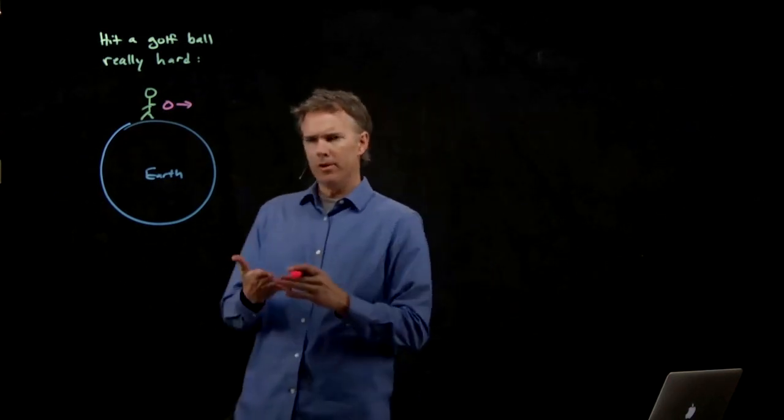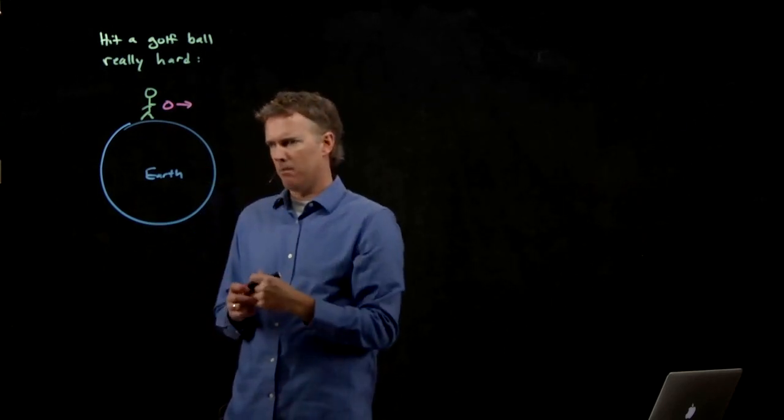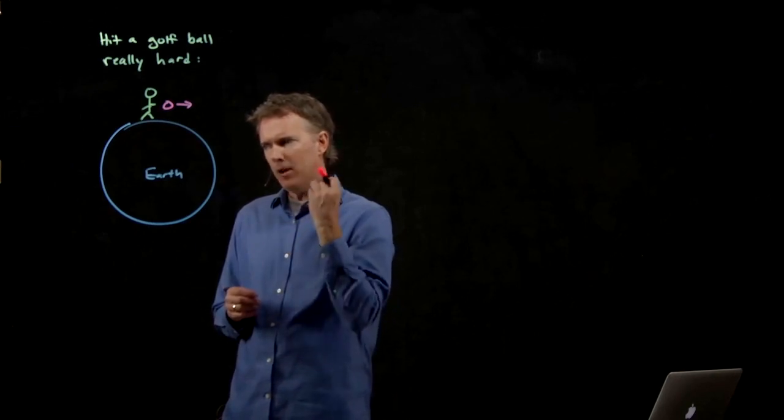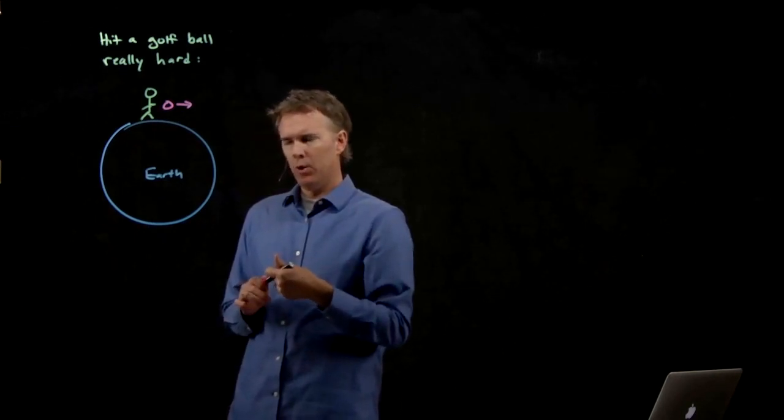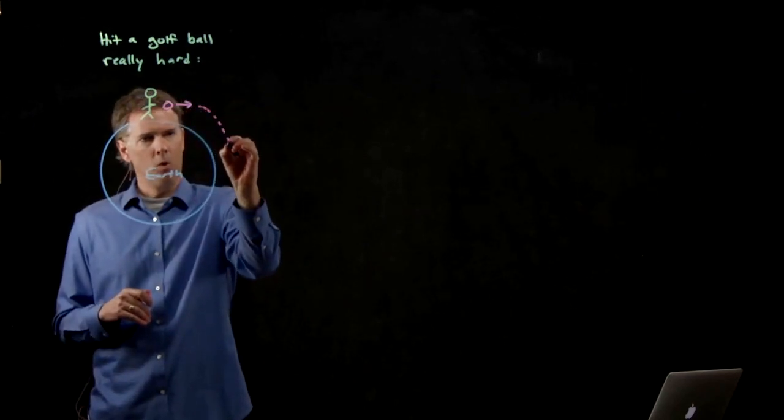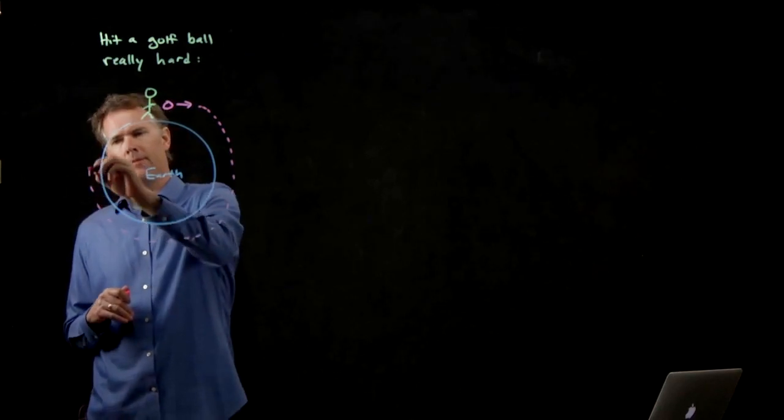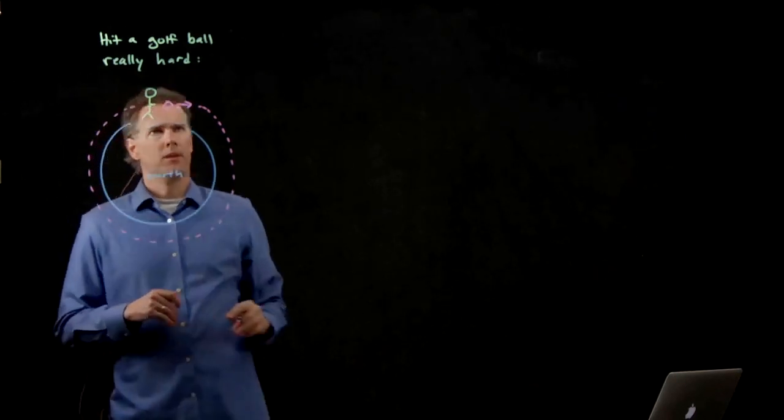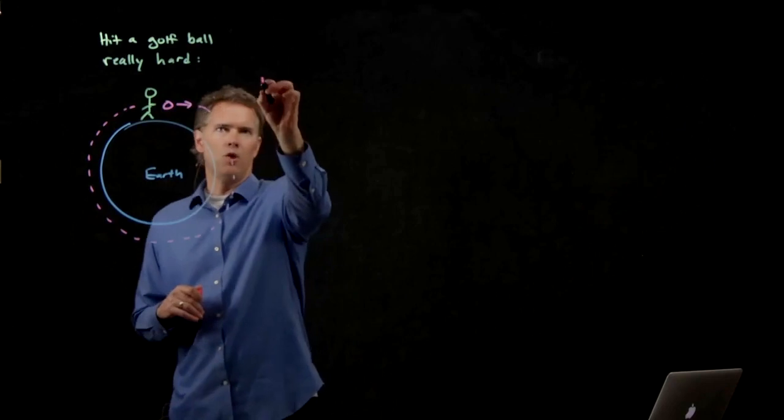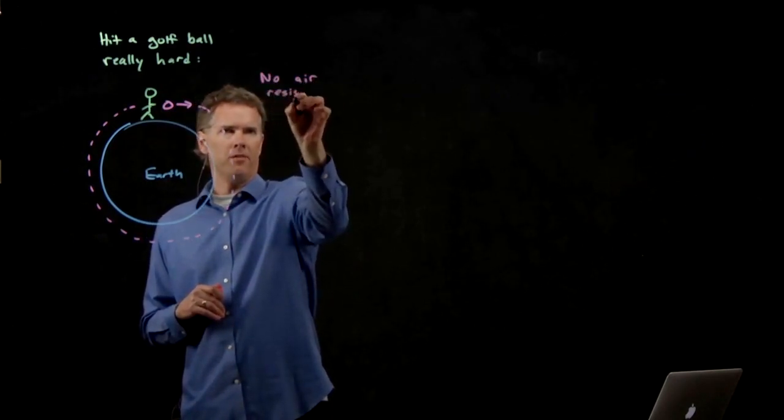If I'm standing on the earth and I hit a golf ball really hard, what can happen? We know if we just hit a golf ball, it sort of follows this parabola, right? This projectile motion. But if I hit it really, really hard, we could get to a point where this thing orbits the earth. No air. Forget about air resistance here.